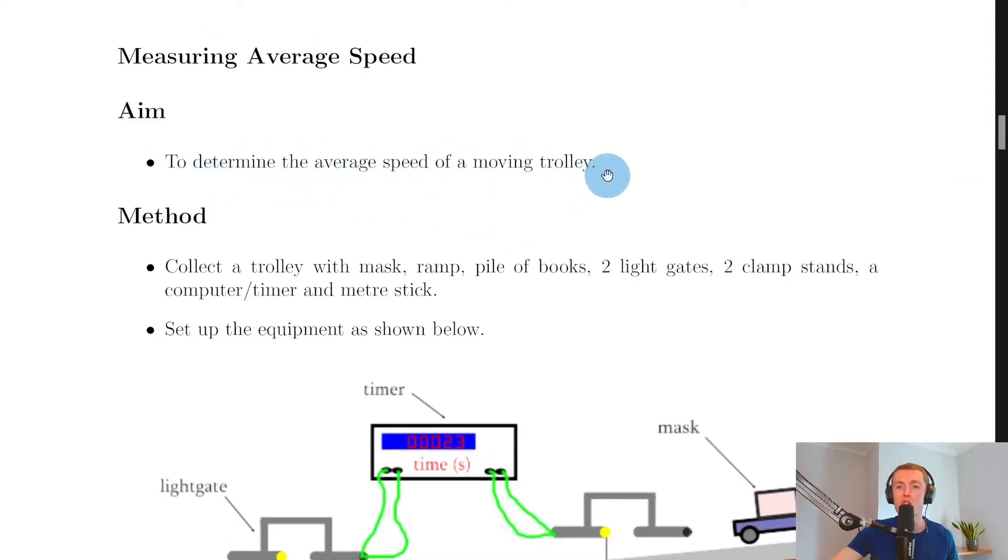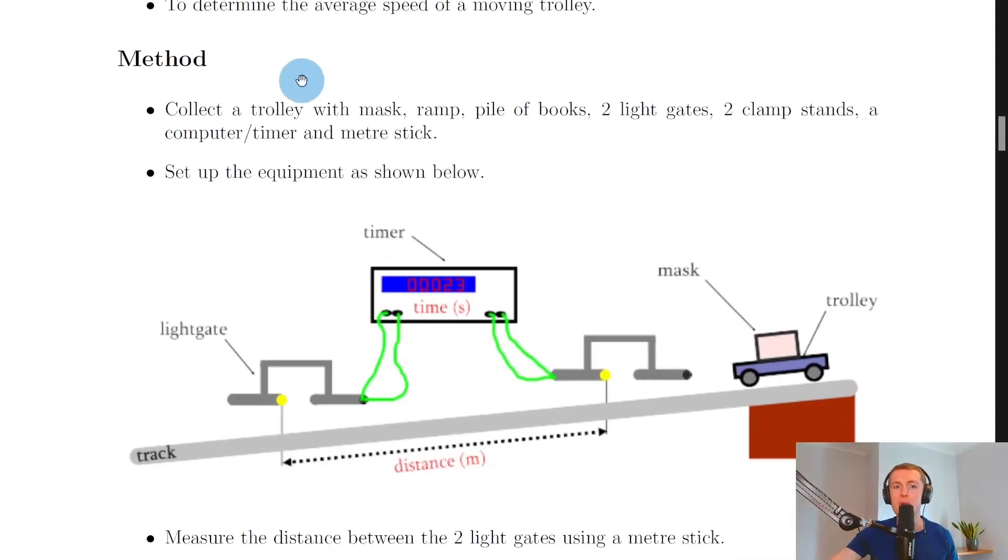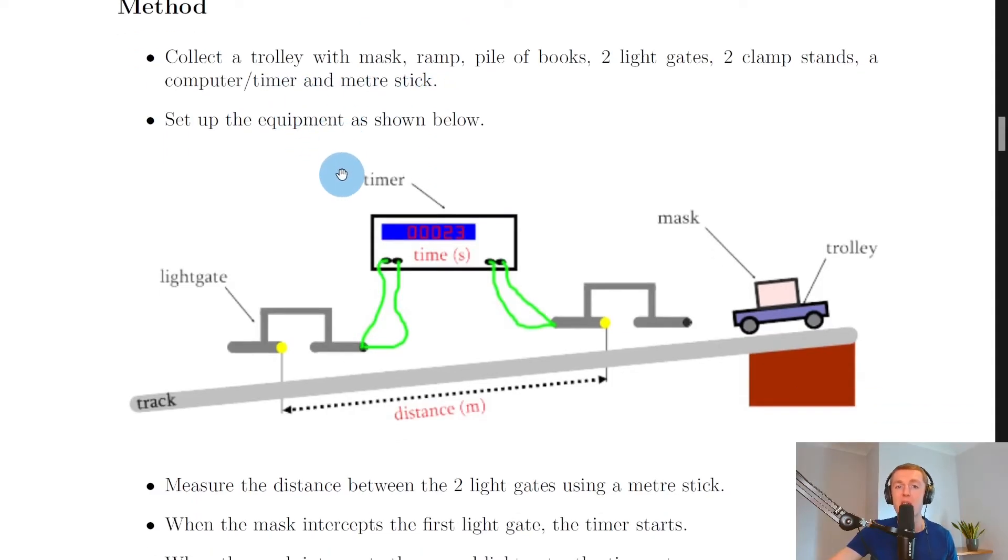The aim of this experiment was to determine the average speed of a moving trolley, the kind of trolley in a physics lab. The method would be to collect a trolley with mask, ramp, pile of books, two light gates, two clamp stands, a computer or timer, and a meter stick. You can set up the equipment as shown below.